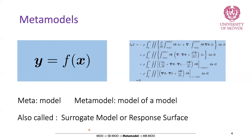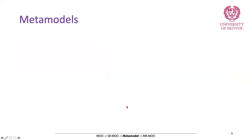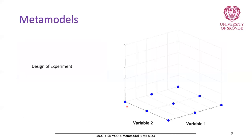But how do we create a metamodel? How do we generate this simple function? What we do is we first create a design of experiment. For example, if you have two variables, this is the decision space. We create nine different design points, each with a value of variable one and a value of variable two. You can create design of experiments with several existing methods — some of them are factorial, Latin hypercube, Hammersley, and Box-Behnken. There are several methods available and you can select one based on your requirement.